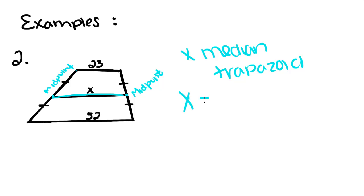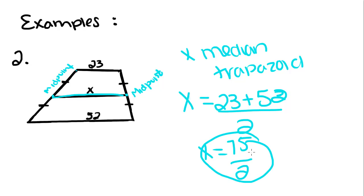So X is equal to the sum of the bases over 2. So X is equal to 23 plus 53 divided by 2, and we'll just leave that as our answer.